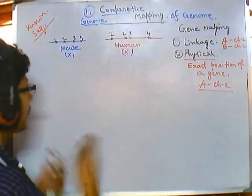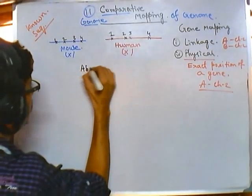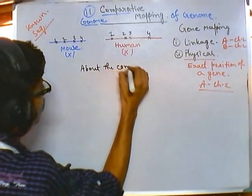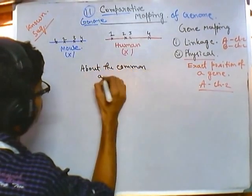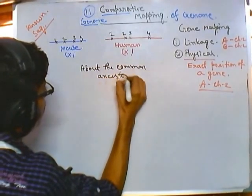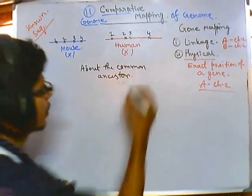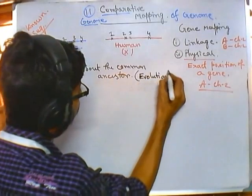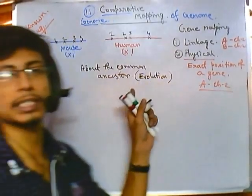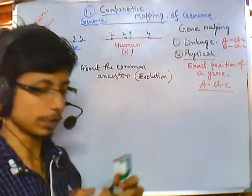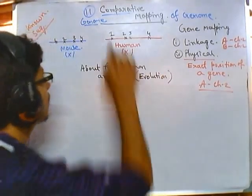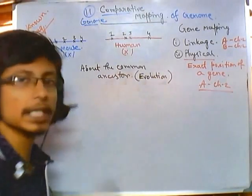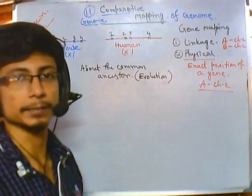Though the gene sequence arrangement is pretty much conserved from mouse to human, the length between genes can vary. This tells us important insights about the common ancestor and whenever we talk about common ancestor, we are talking about evolution — the evolutionary relationship between two different organisms. We can use this comparative mapping to understand evolutionary relationships.